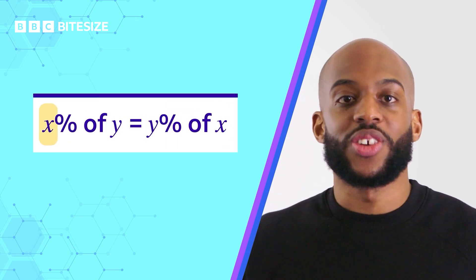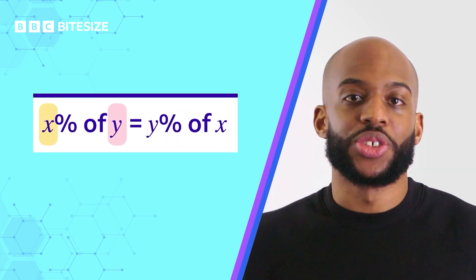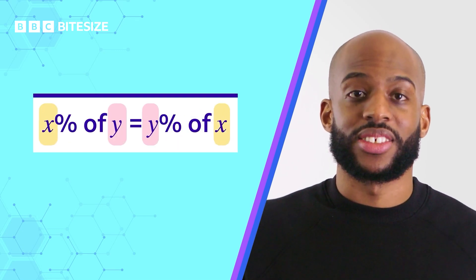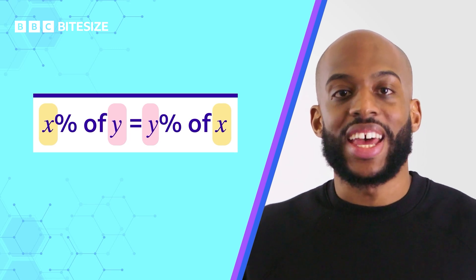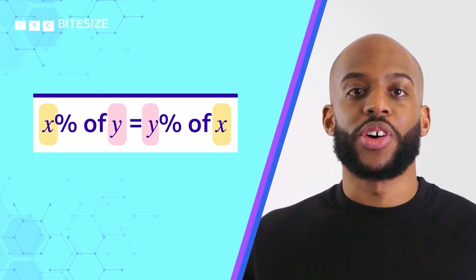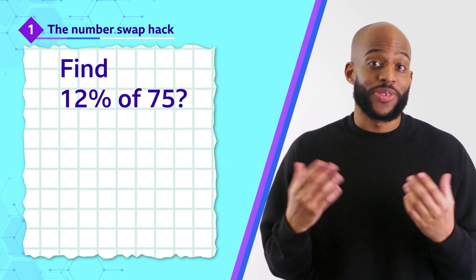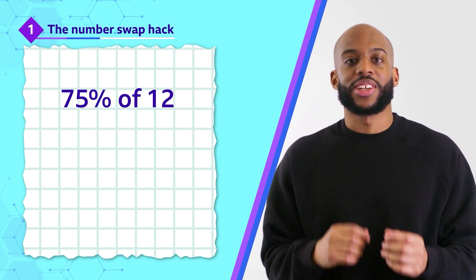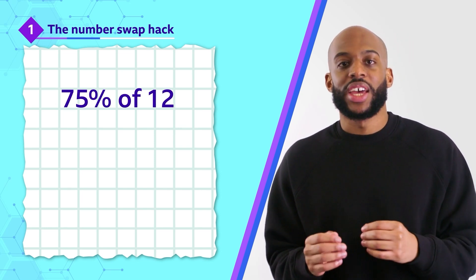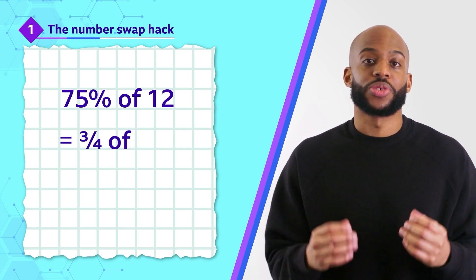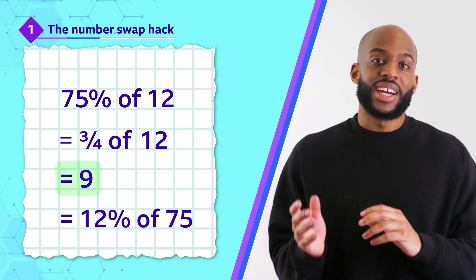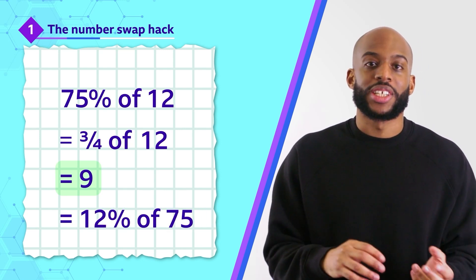Pretty cool, right? It's all because X% of Y gives you the exact same answer as Y% of X, and this method will work with any percentage conversion. 12% of 75? Swap it round to 75% of 12. Now you need to find 3 quarters of 12, which is 9. And 9 is also 12% of 75.